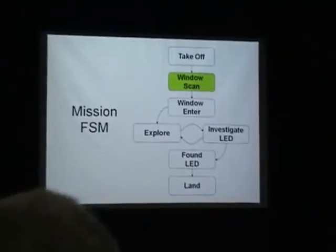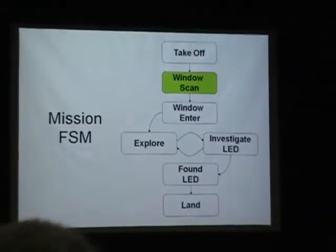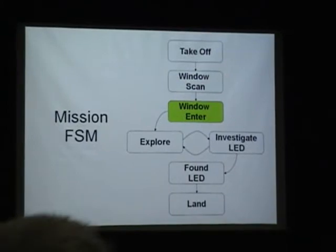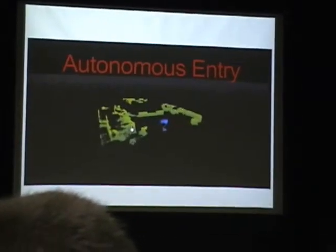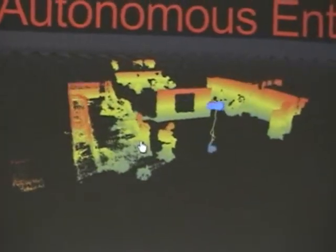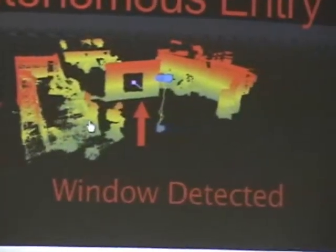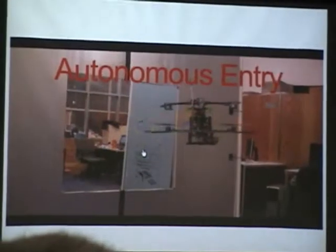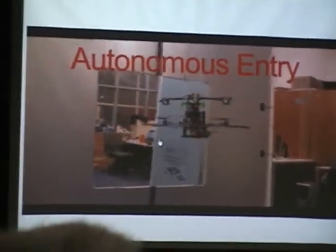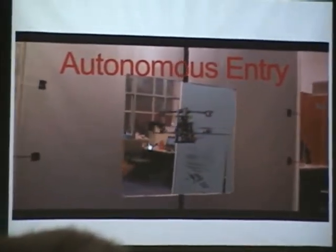Once we have the position of the window, we can do the window entry. We saw a similar thing in the video earlier, but here it is again. These are the raw laser points that we detect. The little pink thing detects the window, and then we fly through.